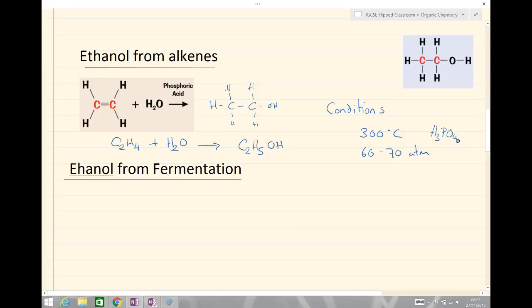There are a few problems with this. Ethene comes from crude oil. Crude oil is non-renewable and the conditions that we use, quite high temperature and quite high pressure, are relatively expensive. And the good side of it is that we end up with something which is 100% pure.